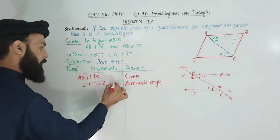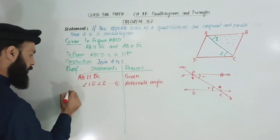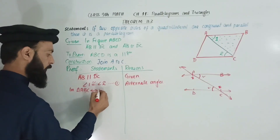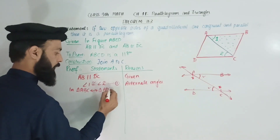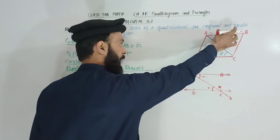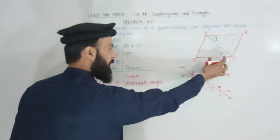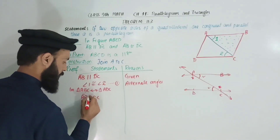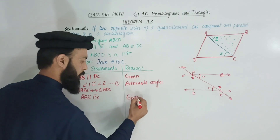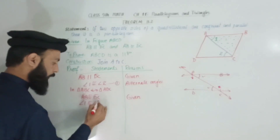By the correspondence, triangle ABC corresponds to triangle ADC. The side AB is congruent to DC as given. Angle 1 is congruent to angle 2 — meaning the alternate interior angles are equal, which we have proven from step one.